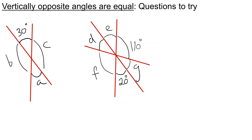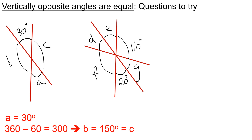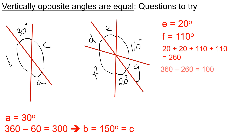Here are some quick questions for you to try. Please pause the video now and have a go. And when you're ready for the answers, press play. A should be 30 degrees. B and C should both be 150 degrees. For the next question, E should be 20, F should be 110. And to work out D and G, they're both 50.